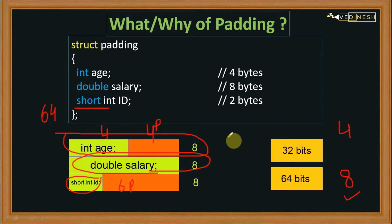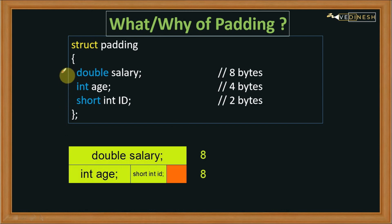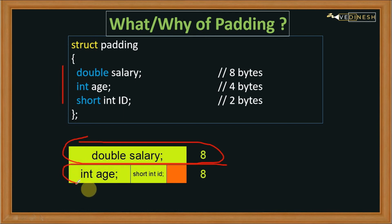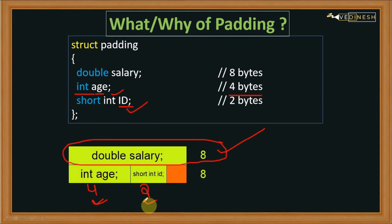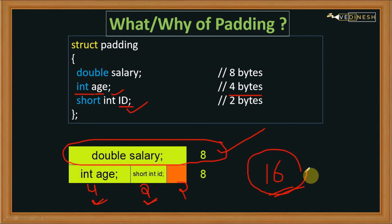To reduce padding, we need to write our structure members in such a way that the operating system can read eight bytes at a time without wasting memory. For example, first the eight bytes of salary are consumed in a single go. Then int age takes four bytes. Then short int id takes two bytes, and only two bytes are added as padding. So only 16 bytes are reserved in memory — saving eight bytes compared to before.